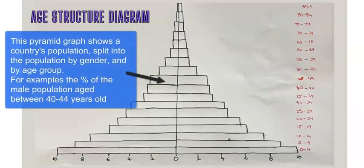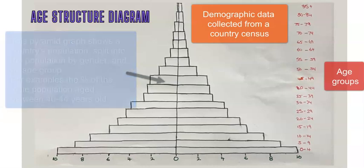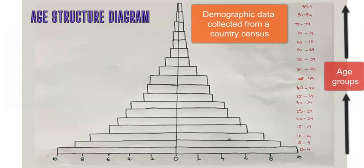Here is a generic age structure diagram or population pyramid. These are produced through a census. Every country that has the means will conduct a census every 5, 10, or 20 years, providing information on the population and ages of people in that country. This particular diagram has 18 different age ranges, starting from age 0 up to 85 plus — which could extend to over 100 in countries like Japan, or only up to 65 or 70 in less developed countries.